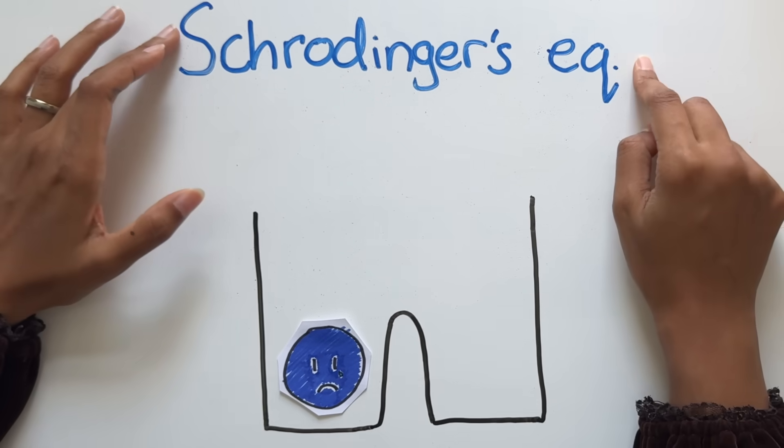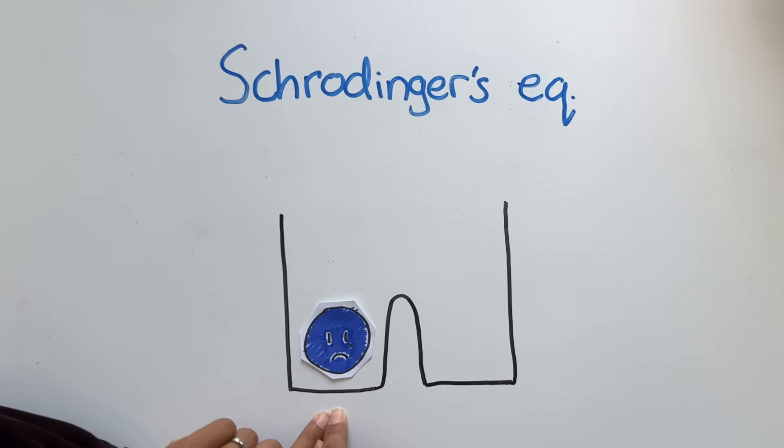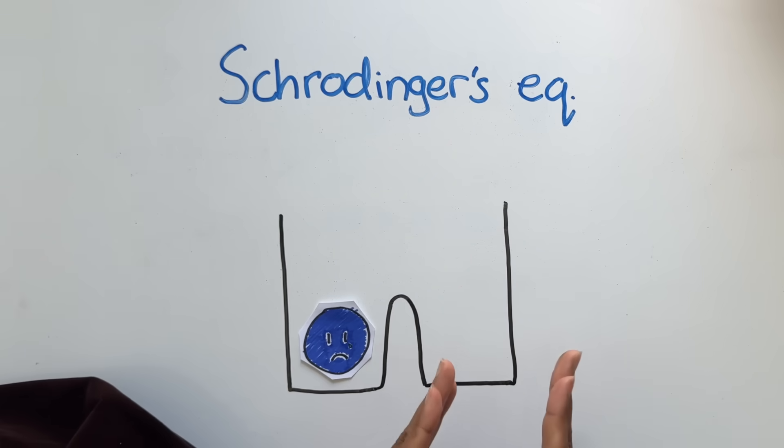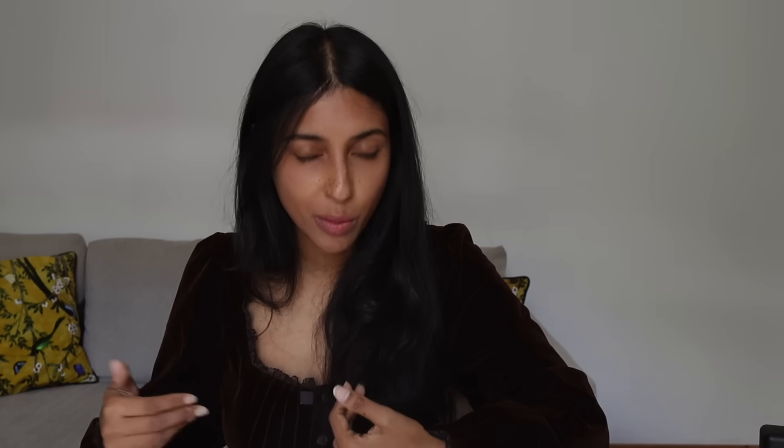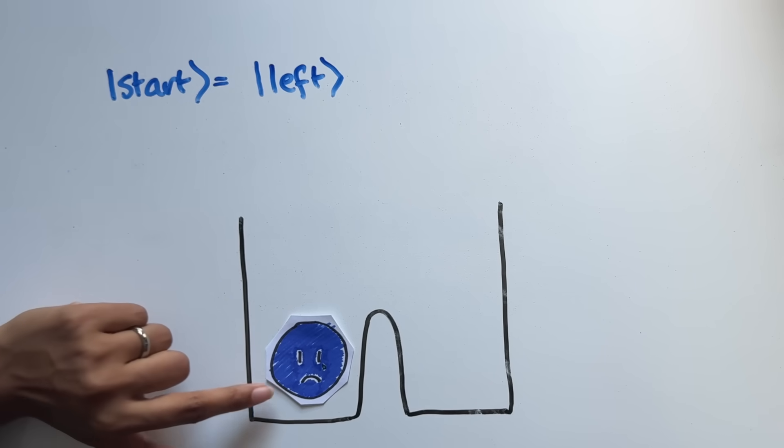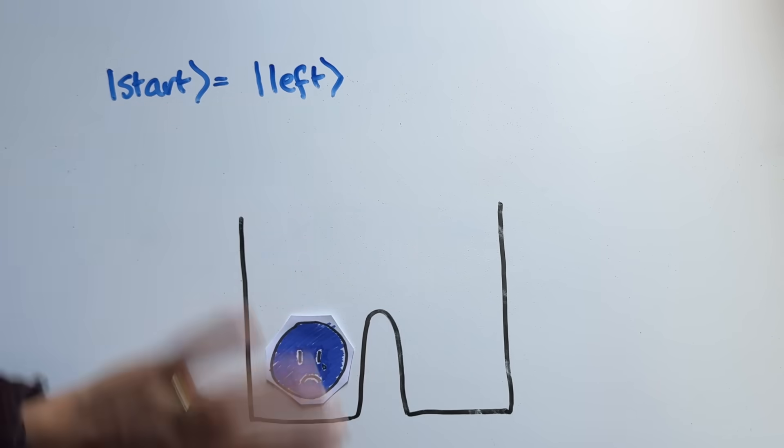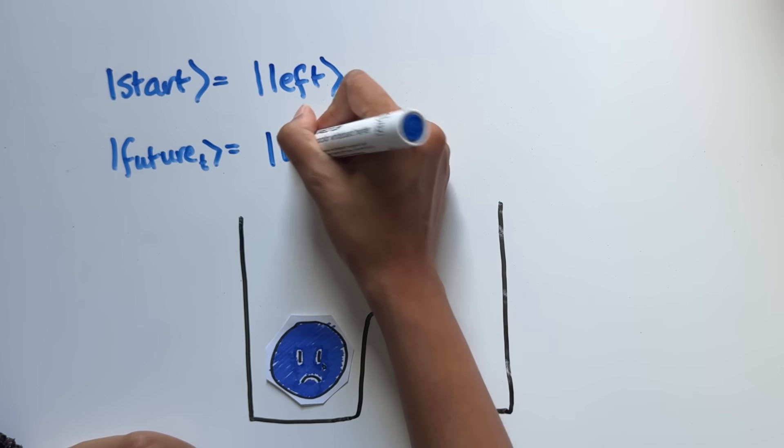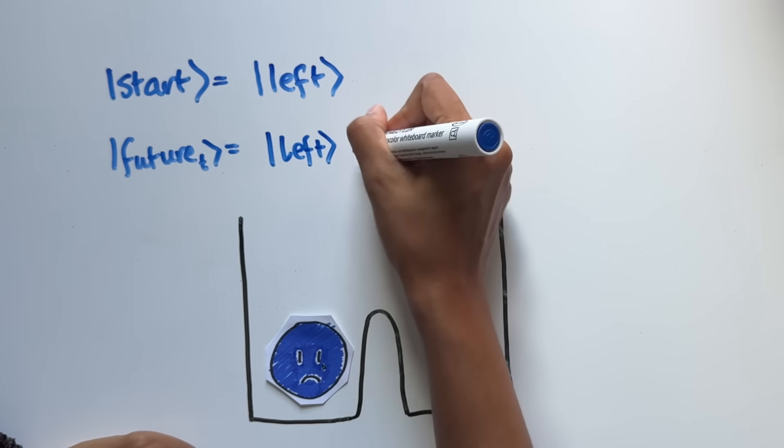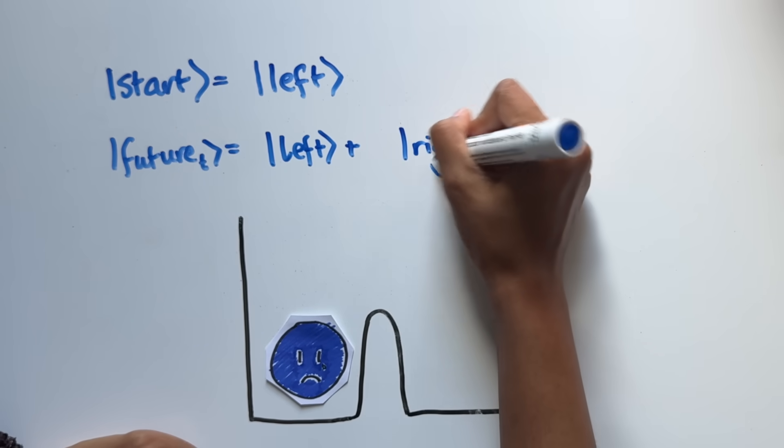Okay, so back to our electron in the double well. I'm not going to actually solve the Schrödinger equation for this circumstance because it is a bit of a pain, but this electron isn't going to just stay here. It will, in some part, move over to here. But in fact, the electron will go into a superposition of being partly here and partly there. So this is how we would represent it. We would say that the start state of this electron is just left, it's fully in the left well. But t seconds into the future, its state is going to be some combination of left and right.